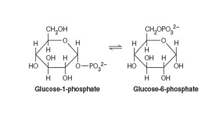Glucose 1-phosphate and glucose 6-phosphate are positional isomers. The difference lies in the attachment of the phosphate group: in glucose 1-phosphate, the phosphate group is attached at the first position, whereas in glucose 6-phosphate it is attached at the sixth position. Glucose 1-phosphate plays an important role in glycogen metabolism, and glucose 6-phosphate is the starting material for many important metabolic reactions.